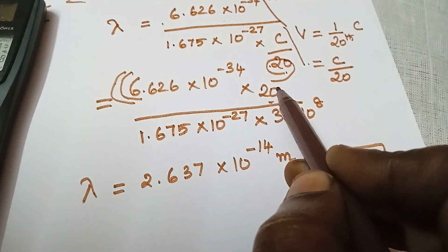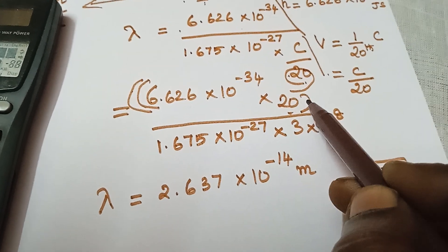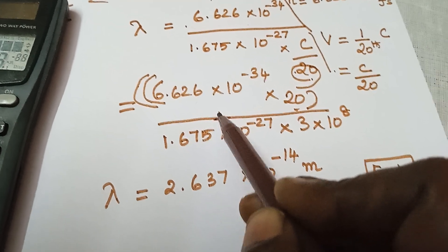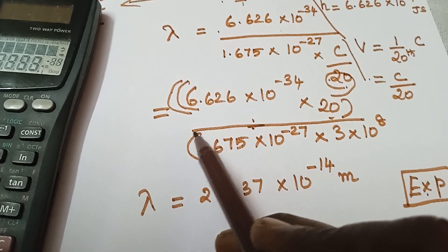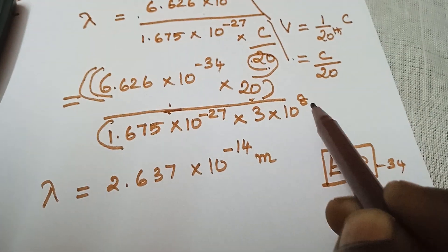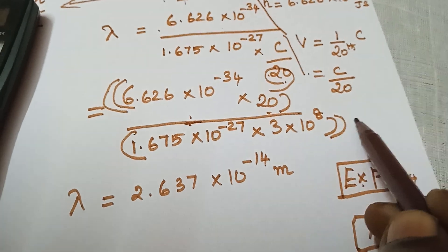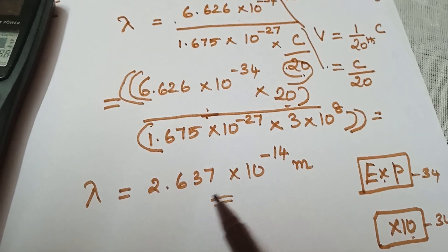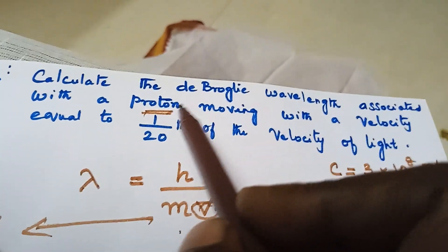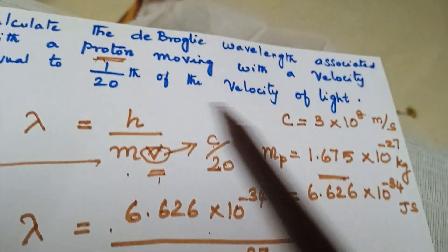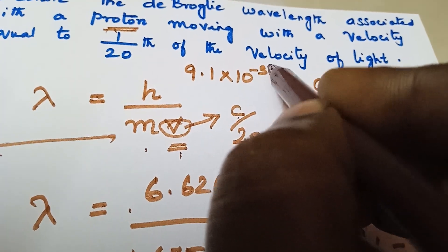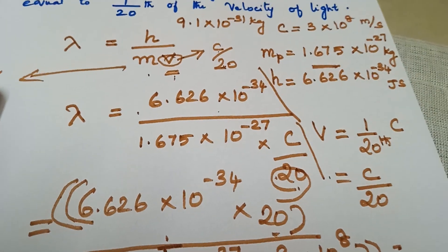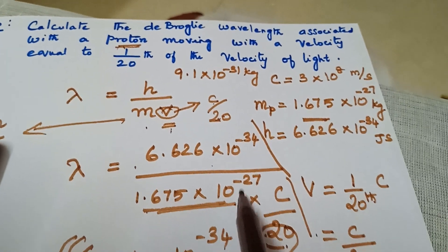All numerator values are substituted inside the first set of brackets, then divided by, and all denominator values are inside the second set of brackets. If the problem involves a neutron, the same mass should be taken. If it is an electron, the mass of the electron — 9.1 × 10⁻³¹ kg — should be substituted in place of 1.675 × 10⁻²⁷.